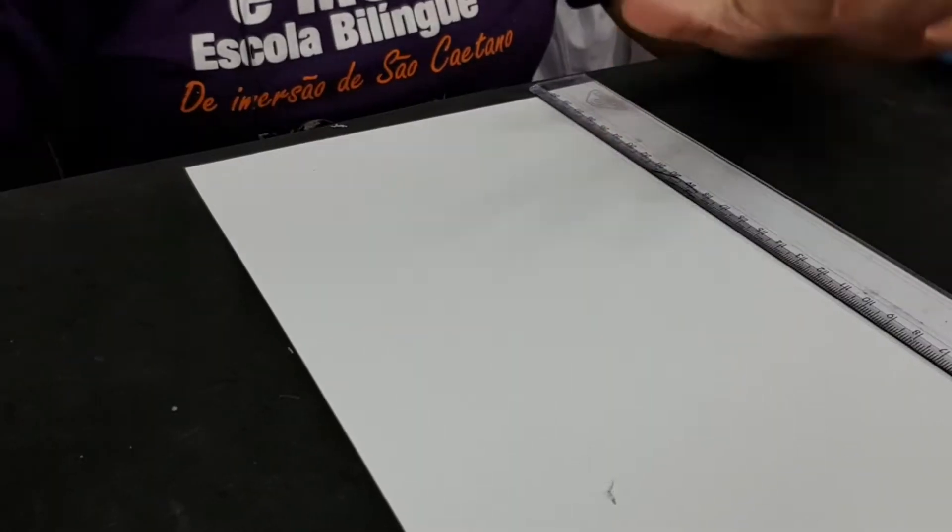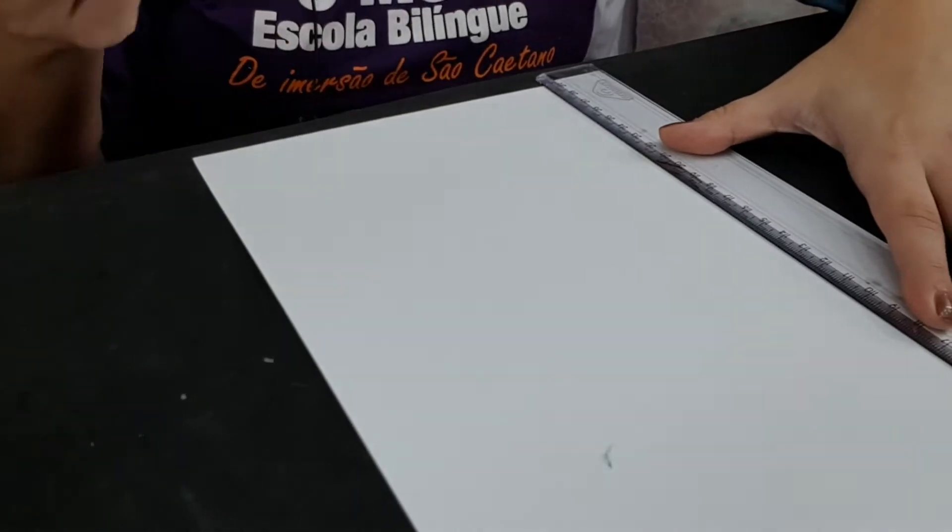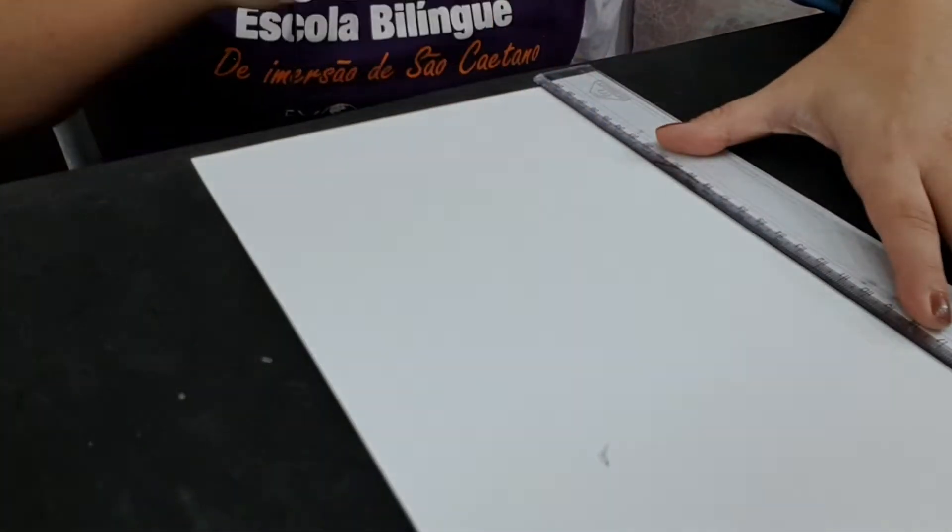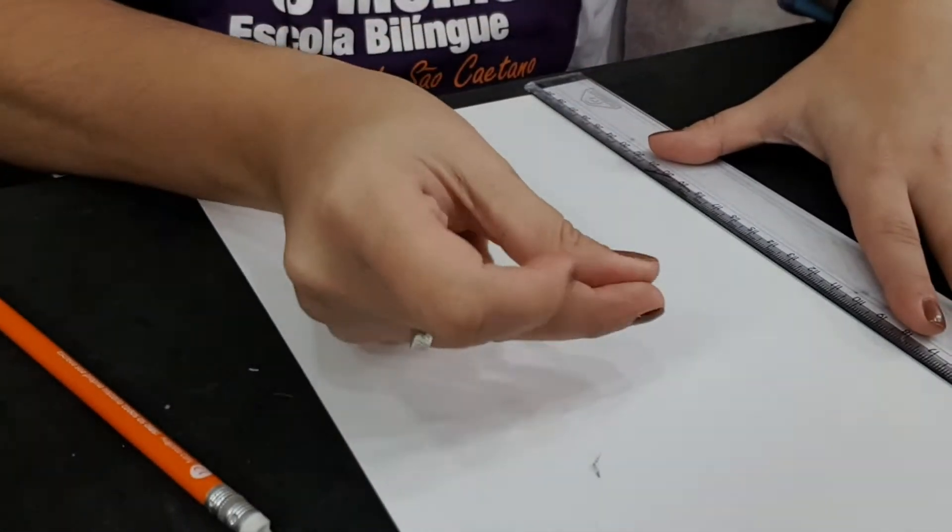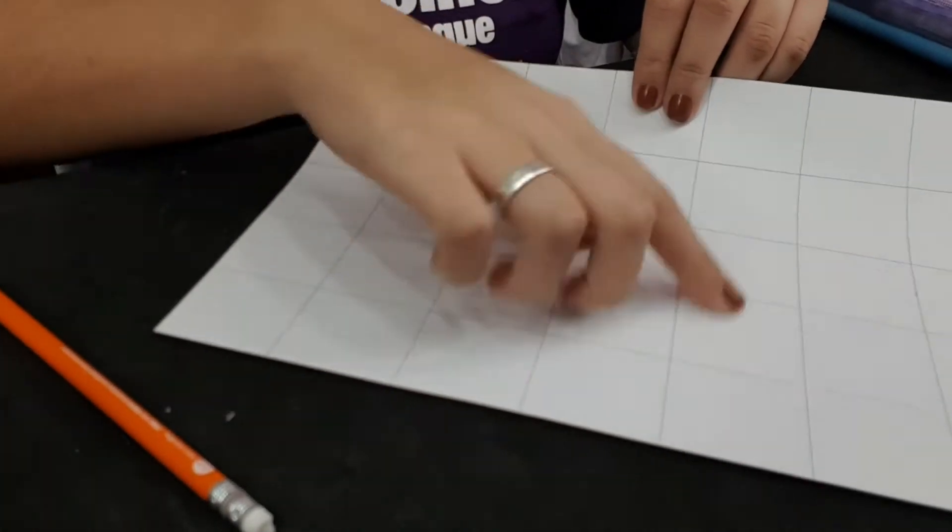We are gonna start using the ruler and the pencil to draw the lines on the paper and make squares, like this. Whoa, look! We have lots of squares here, right? So now we can start the numbers.